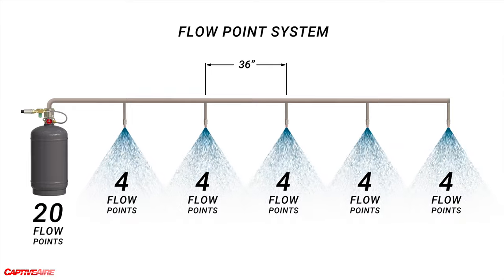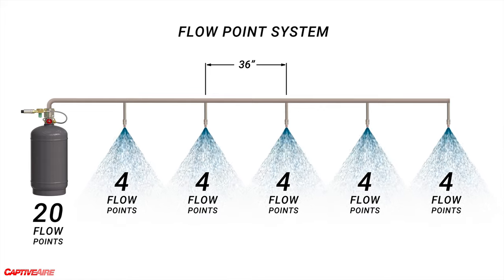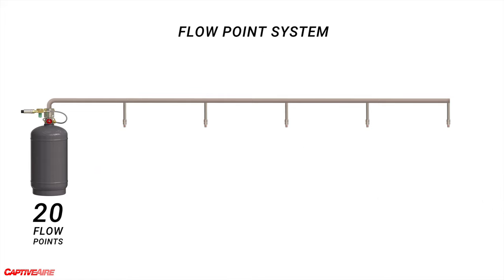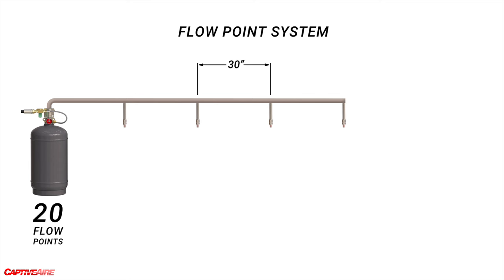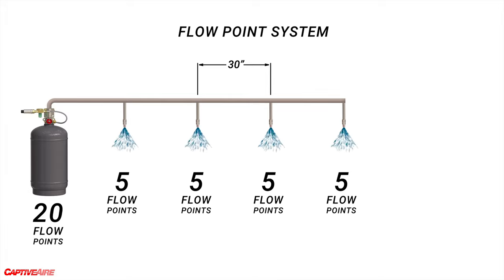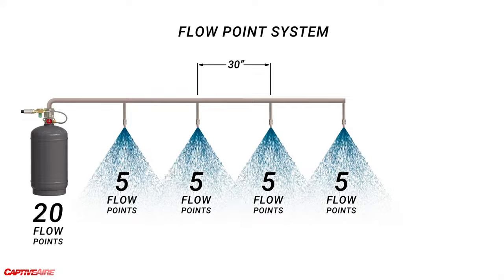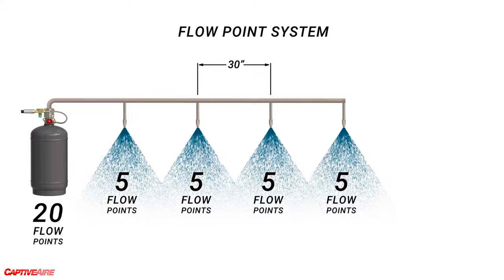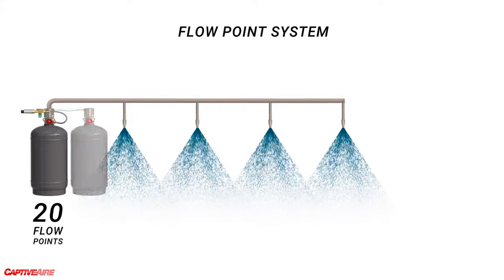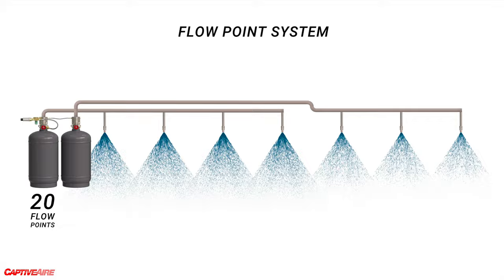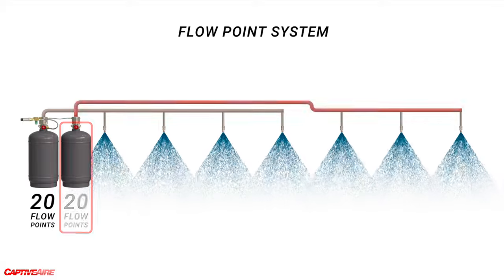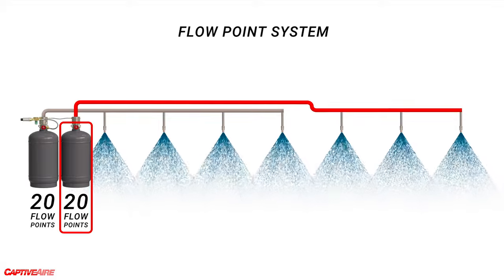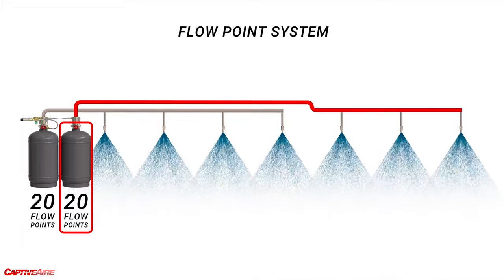Some heavy-duty appliances require more flow — say we had a bunch of deep fryers under the hood. In that case, we would space the nozzles a maximum of 30 inches apart and use only four nozzles per tank, each nozzle receiving five flow points. Fewer nozzles per tank spaced closer together means more agent delivered to each fryer. For a longer hood, we'd likely have to add more tanks to properly cover the appliances, and each new tank gets another 20 flow points to be distributed accordingly.